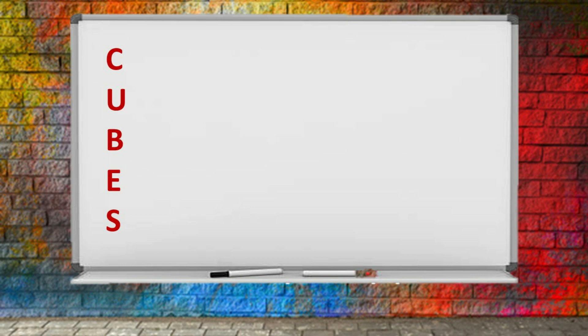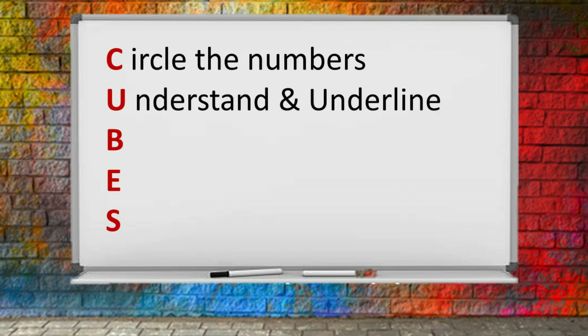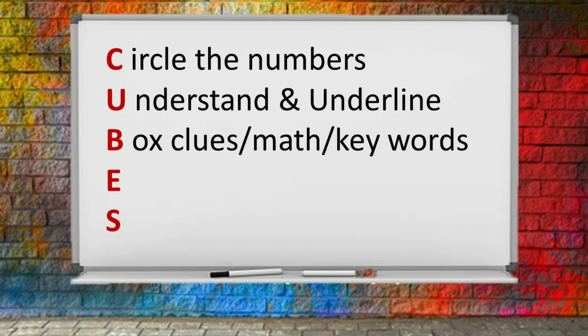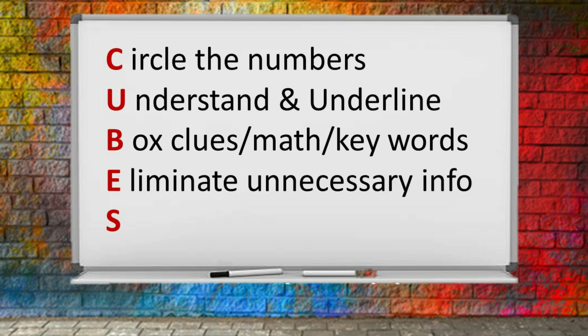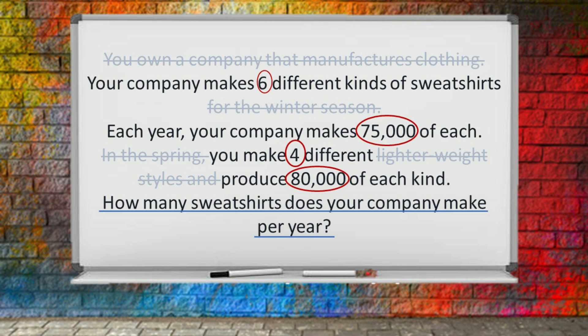Here's one that I think is even better. The acronym is CUBES: Circle the numbers; Understand what is being asked and Underline the question; then Box all your clues — math actions and key words; the E — Eliminate unnecessary information; then the S — Solve and show your work. So as we go back and take a look at our word problem, here is what it looks like when we've applied the technique called CUBES.